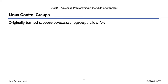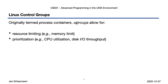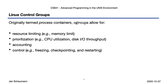Now these control groups, or cgroups, or process containers as they were initially called, allow for isolation of the different resource utilization we've seen: memory limits, CPU utilization, prioritization and limits, accounting — that is, keeping track of which processes utilize which resources in what ways — and process control, allowing for suspension, interruption, application checkpointing, and restarting of processes.